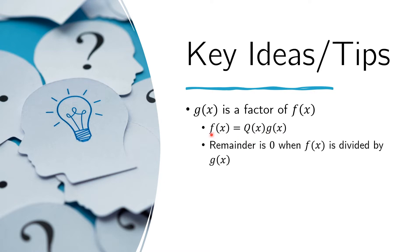And we can also say that the remainder is zero when we divide f of x by g of x. That's what we mean by g of x is a factor of f of x.